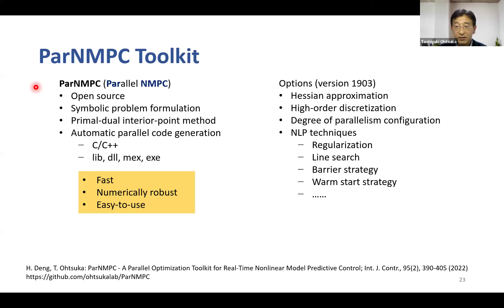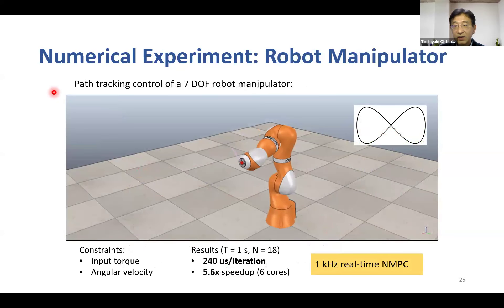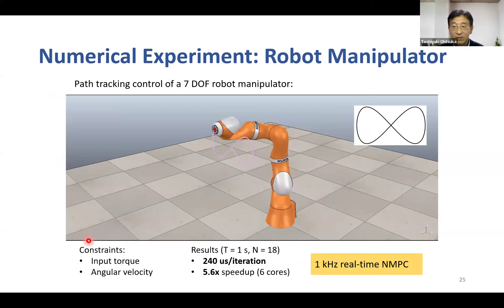We developed a code generation toolkit ParNMPC for the proposed parallel algorithm, available on GitHub. ParNMPC is a MATLAB-based tool that generates C or C++ code by symbolic computation. Comparison shows ParNMPC is not fastest with a single core, but is fastest with six cores achieving four times speed-up. For a seven-degree-of-freedom robot manipulator, combining the parallel algorithm with a fast algorithm tailored for rigid-body dynamics allows NMPC to be implemented within one millisecond, even for this fast and complex nonlinear system.